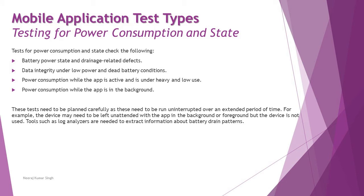Finally, power consumption and the state of the device will also impact app usage. Tests for power consumption and device state should cover: battery power state and drainage-related defects; data integrity under low power and dead battery conditions; power consumption while the app is active under heavy and low use; and power consumption while the app is in the background. The app should not consume excessive power, and when turned off, data should be retained — so a banking app or game resumes where it left off when the device is turned back on.